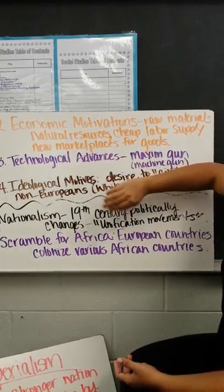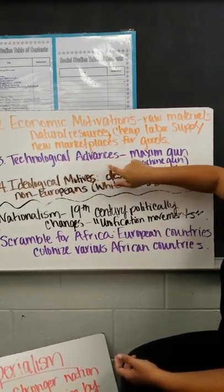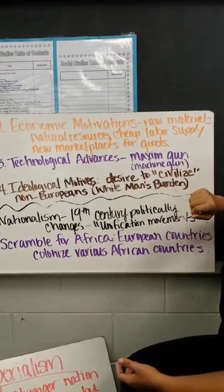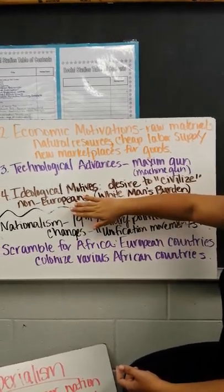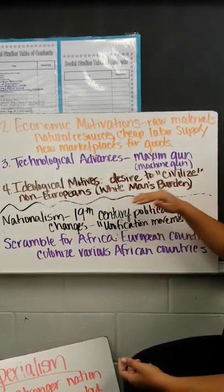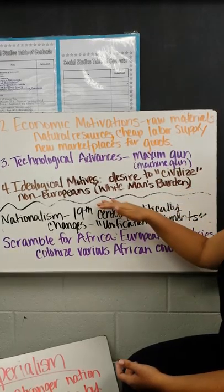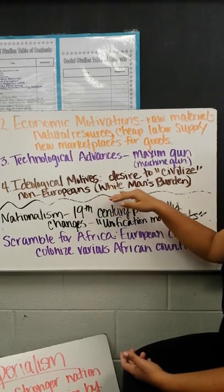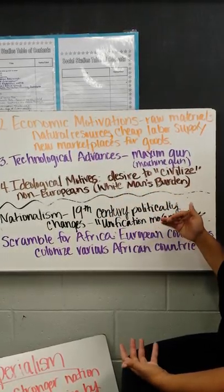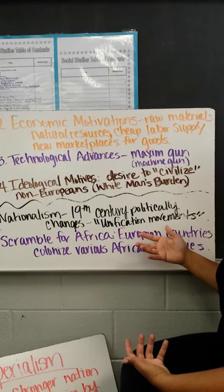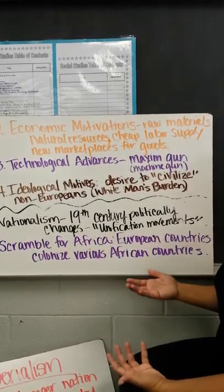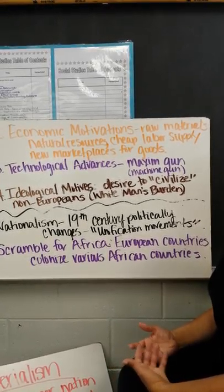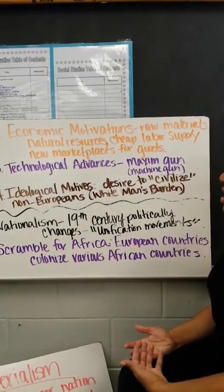You're also going to see an increase in technological advances. An example of that is the Maxim gun, which is a machine gun. The fourth cause is ideological motives — basically a desire to civilize non-Europeans, such as Asians and Africans. It's called the white man's burden. The Europeans saw Africans as being uncivilized, as barbarians, so they thought it was their duty to go into Africa, civilize them, teach them Christianity, and make them a better group of people.